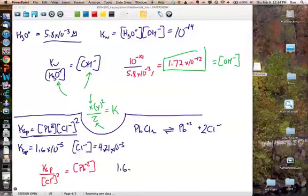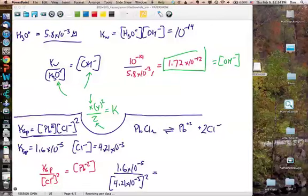In this case, it's 1.6 times 10 to the minus 5th divided by 4.21 times 10 to the minus 3rd squared, which equals the maximum lead ion concentration of 0.902 molar.